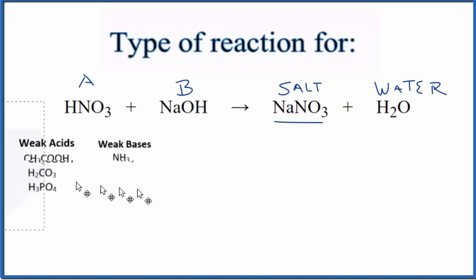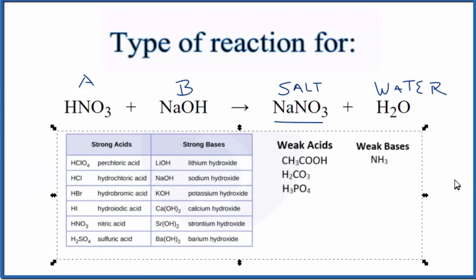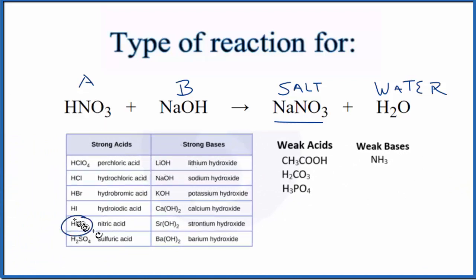It's helpful to memorize these common acids and bases. That'll save you a lot of time as you learn chemistry. So let's look down here. Nitric acid, HNO3, that's an acid and it's a strong acid. And then NaOH right there, sodium hydroxide, that's a base and it's a strong base. So very useful table to memorize.